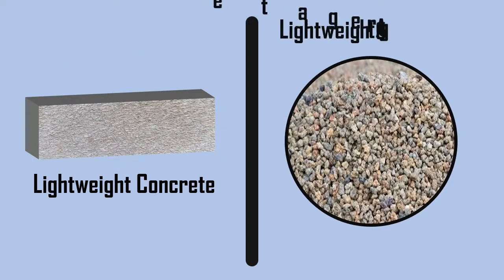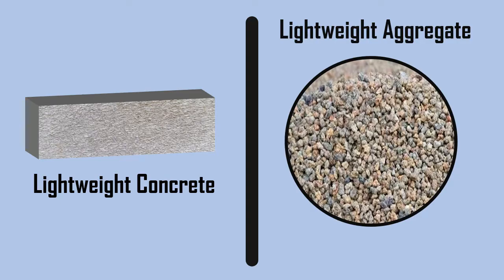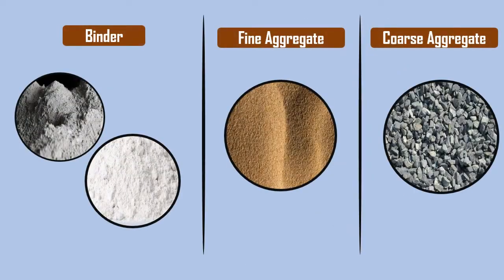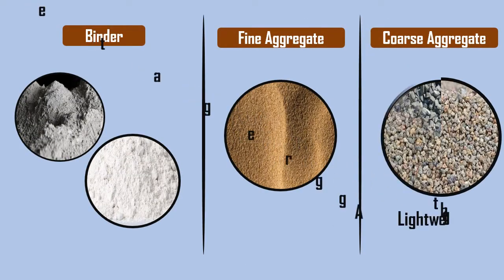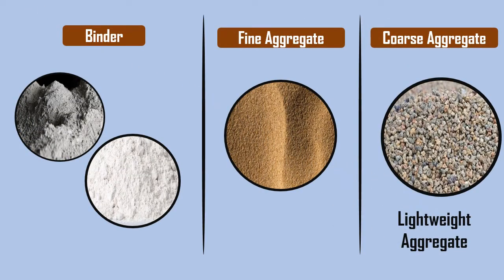Lightweight concrete is made by replacing some or all the normal weight aggregate with lightweight aggregate. Often the coarse fraction is replaced with lightweight aggregate and the fines are normal weight sand.